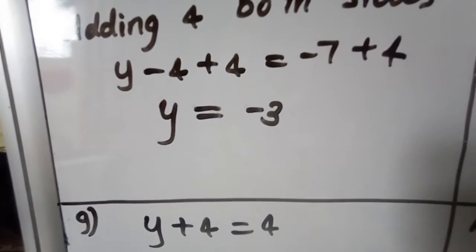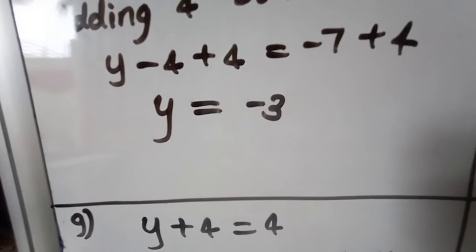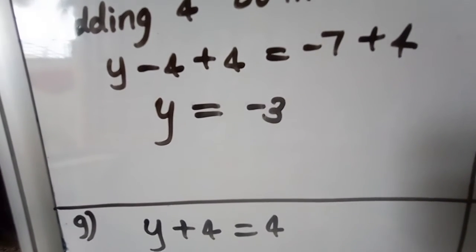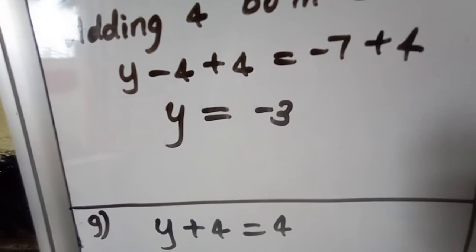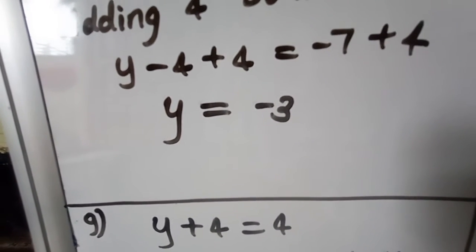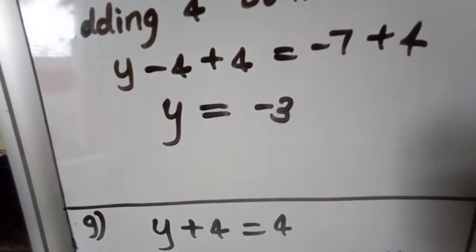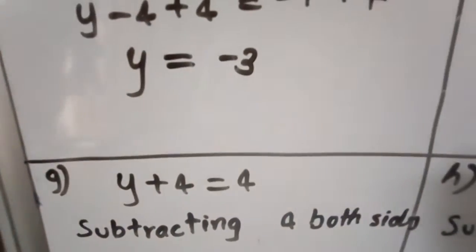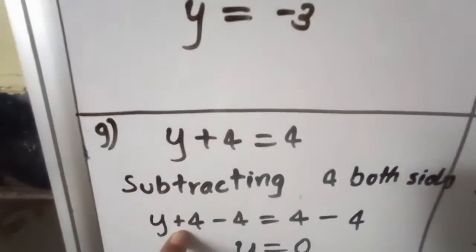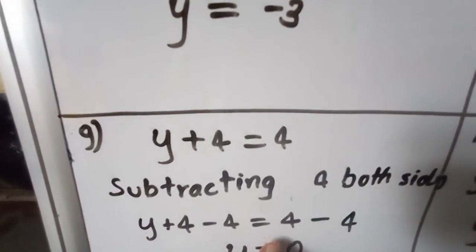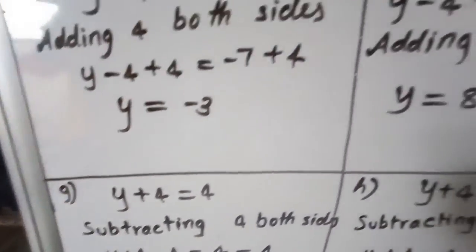Question G: y plus 4 is equal to 4. To separate the variable, we subtract 4 from both sides. y plus 4 minus 4 equals 4 minus 4. Plus 4 minus 4 cancels to 0, and 4 minus 4 on the right also gives 0. So y is equal to 0.